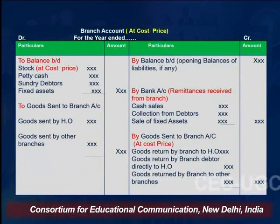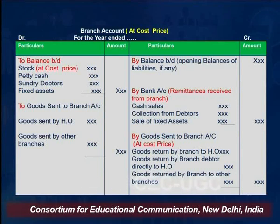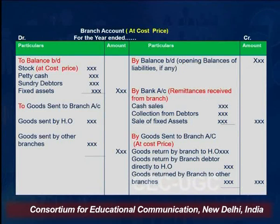This is the format of the branch account prepared at cost price. On the debit side, it starts with the opening balances of all assets. If balances of assets are given in the question, they are shown on the debit side. Since we are preparing this at cost price, the first item is stock shown at cost price. The opening balance of all assets — stock, petty cash, sundry debtors, fixed assets — appear on the debit side. The next item on the debit side is goods sent to the branch.